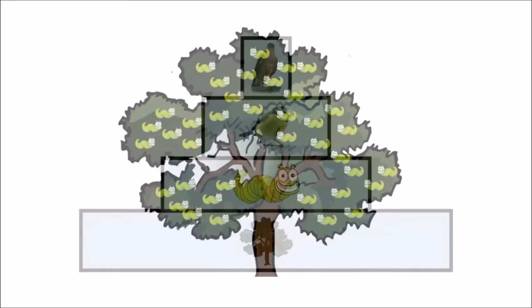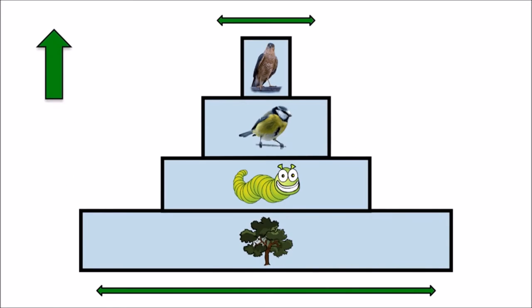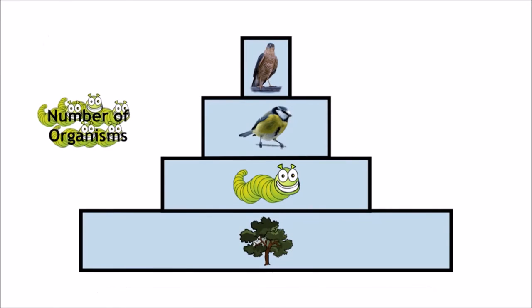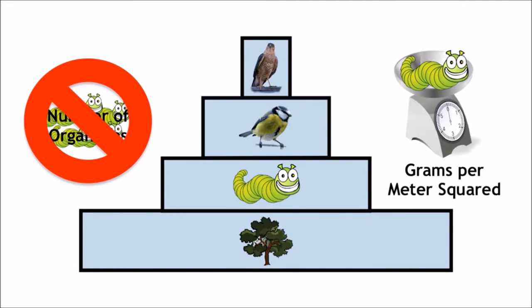Pyramids of biomass, on the other hand, are almost always largest at the bottom and then get smaller going up. This is because, rather than showing the number of organisms, they show the total mass in that trophic level.